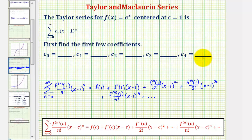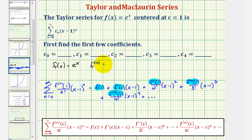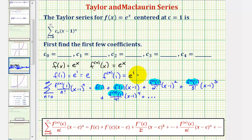For the next step, we'll determine the function values f of one, f prime of one, f double prime of one, f triple prime of one, and the fourth derivative of f evaluated at one. Because our function is f of x equals e to the x, and this function is its own derivative, all of the nth derivatives will equal e to the x. Therefore f of one equals e, and all derivative functions evaluated at one are also e to the one, or just e.